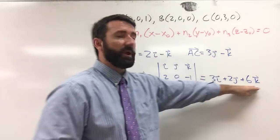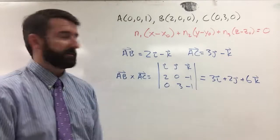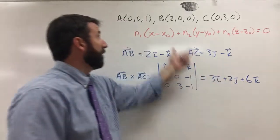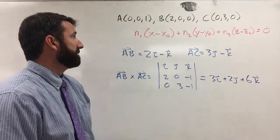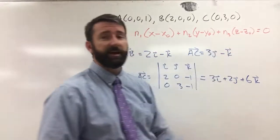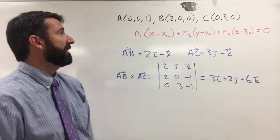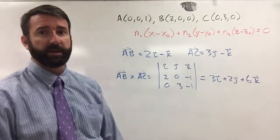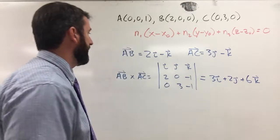So there's our normal vector. This vector is normal to that plane. And now for x0, y0, z0, we can choose any point on the plane. We've been given three points on the plane. Let's go ahead and just use point A.